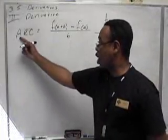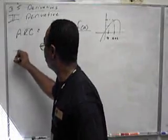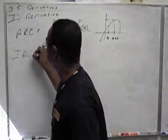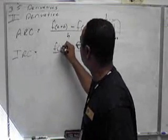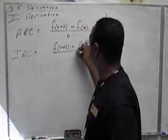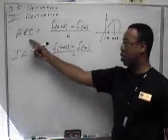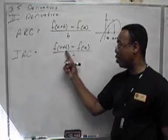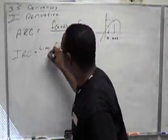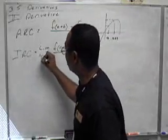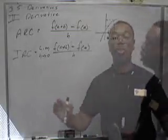So, the average rate of change is found by finding this slope. The instantaneous rate of change uses the same formula from the average rate of change, but the H's will get smaller and smaller. And we demonstrate that by saying we're looking for the limit as H approaches 0, or H gets smaller and smaller.